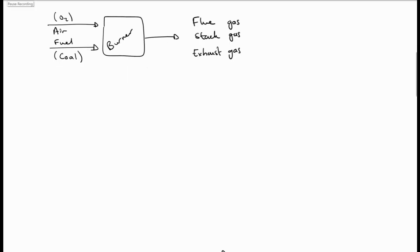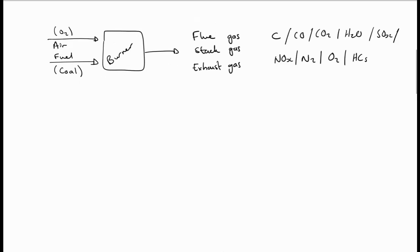The product gas leaving this burner is referred to typically as the flue gas, stack gas or exhaust gas. And the stack gas, flue gas, exhaust gas, whichever one you want to use, will contain all the combustion products and also the unreacted feed material.